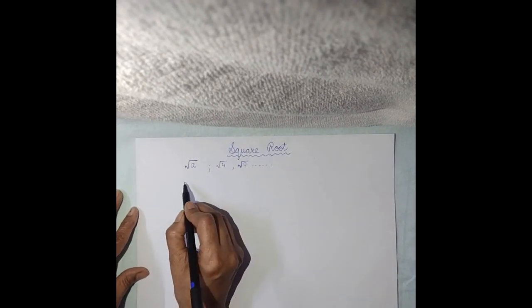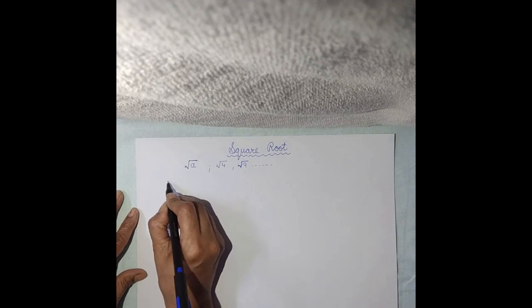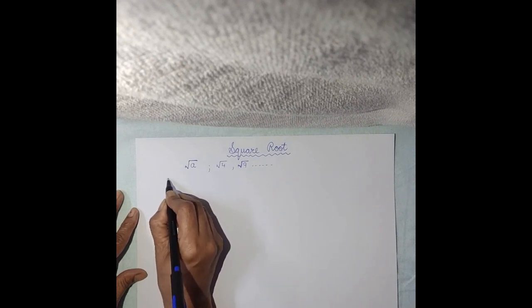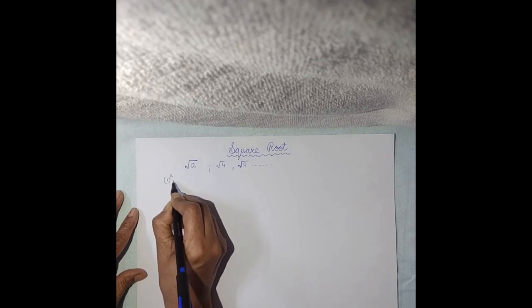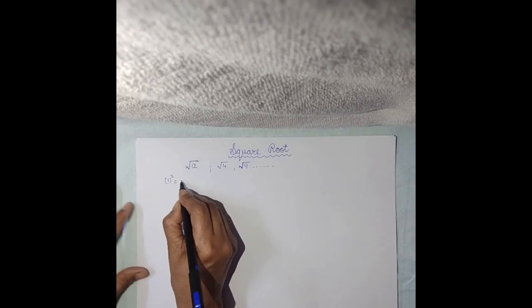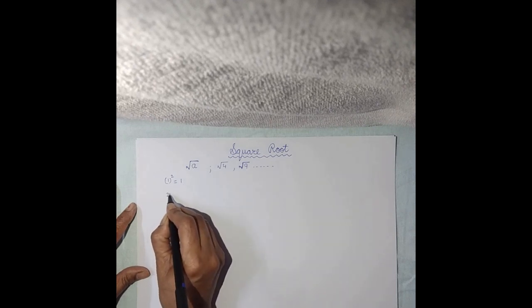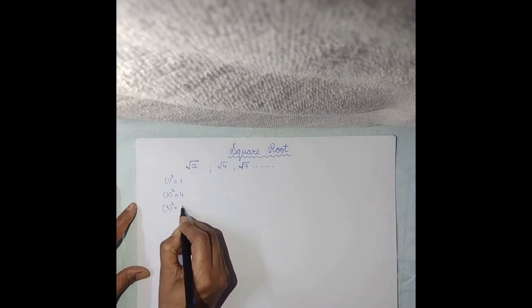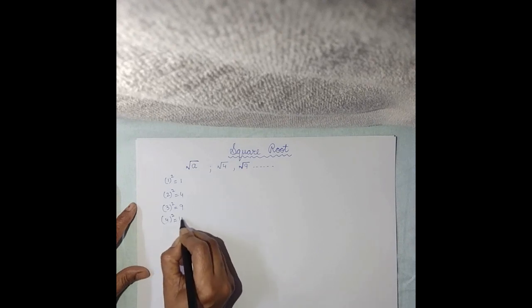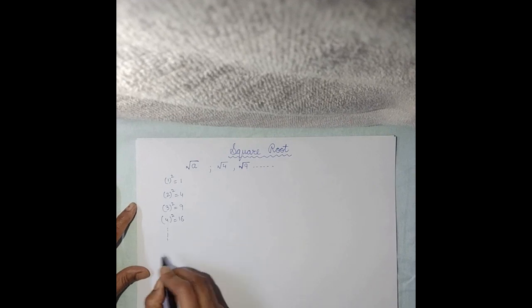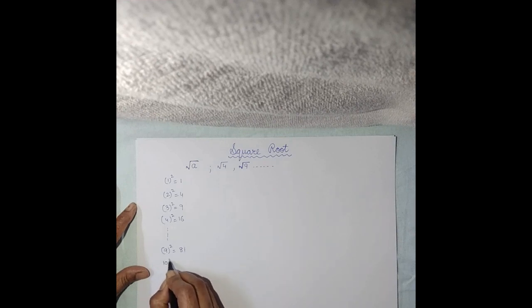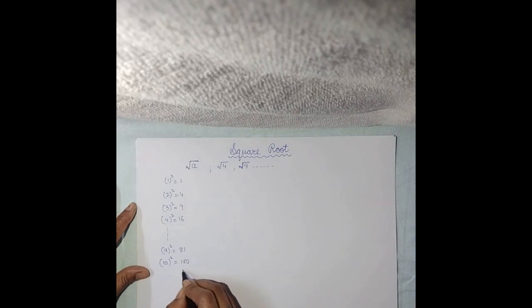Before we take the method of Square Root, let's see the previous knowledge once again — you did this in your previous class. 1 square equals 1, 2 square equals 4, 3 square equals 9, 4 square equals 16, and like this. 9 square equals 81, 10 square equals 100. Like this you can continue further also.